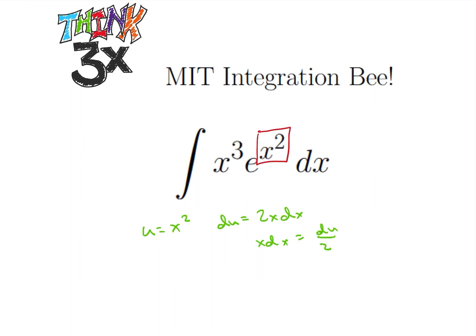So let's rewrite this now. I can rewrite this as x squared e to the x squared x dx. And you can kind of see why I did that probably.